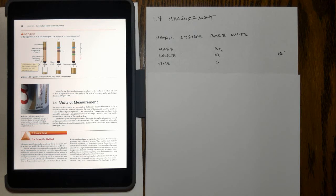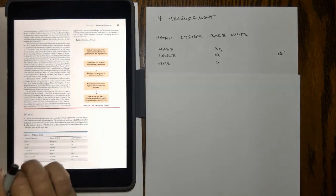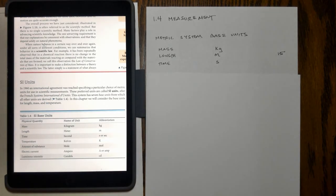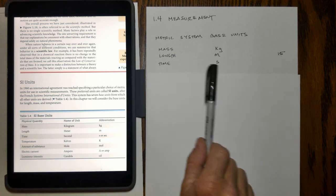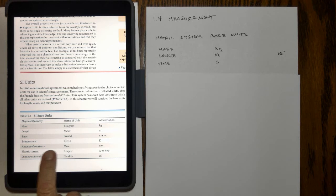First of all, we're mostly going to use the metric system in this class, although we will convert from English to metric or vice versa. The metric system has a number of base units that describe the quantity of matter. For example, mass uses the kilogram, length uses the meter, time uses the second. The mole is a very interesting one that we'll learn a lot about in this course, which gives us the amount of substance.